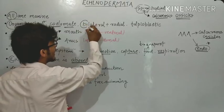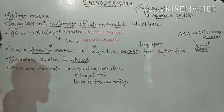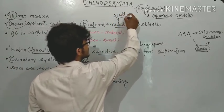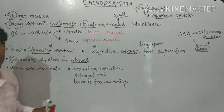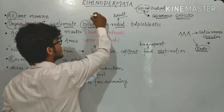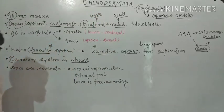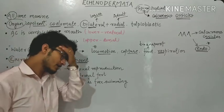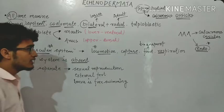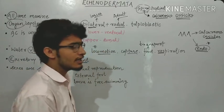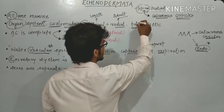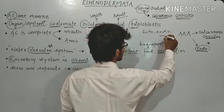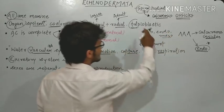Both bilateral and radial symmetry are present — this is a special case. Adult echinoderms, like Coelenterata and Ctenophora, are radially symmetrical, while the rest of the animals are bilaterally symmetrical. Specifically, the larva of echinoderms is bilaterally symmetrical and the adults are radially symmetrical. From Platyhelminthes and all higher animals, they have three germ layers — ectoderm, endoderm, and mesoderm — so all of them are triploblastic.